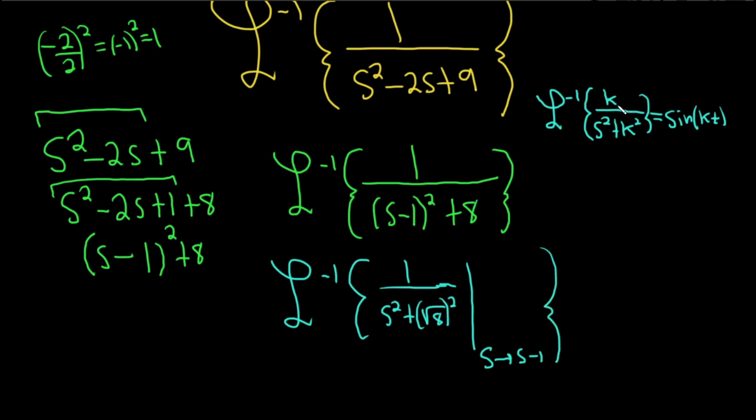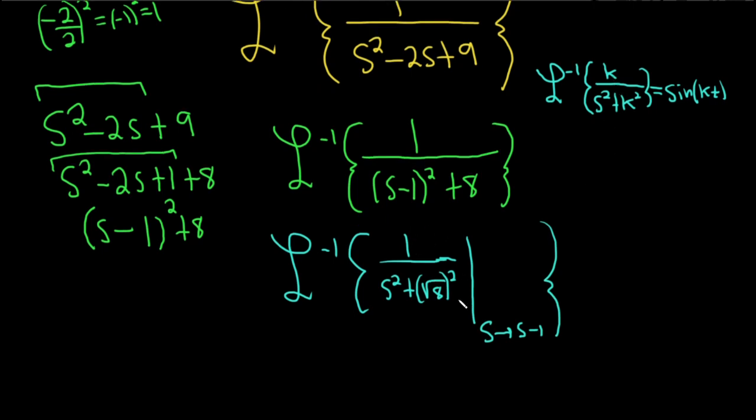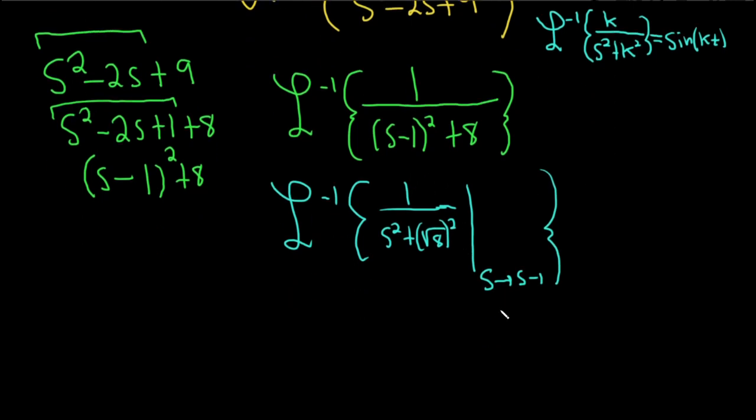We can't quite use the formula yet, because the k is not here. k is the square root of 8, so let's put it there. Inverse Laplace transform of the square root of 8 over s squared plus the square root of 8 squared, going from s to s minus 1.